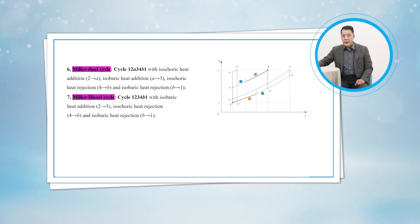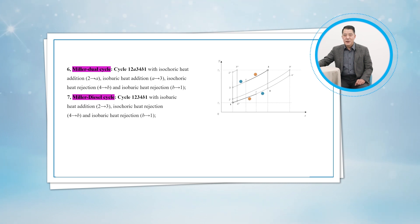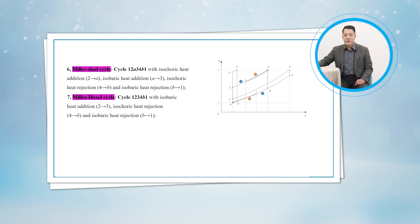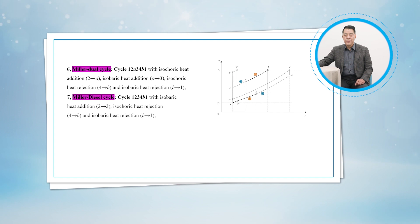The sixth one is the minor Diesel cycle. This means in figure 10-38, state A is merged with state 2, and the minor Diesel cycle is the cycle 1-2-3-4-B-1.